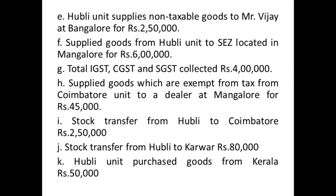Transaction 6: Supplied goods from Hubli unit to SEZ located in Mangalore for Rs. 6,00,000. Both Hubli and Mangalore are in Karnataka, so it is intrastate. We have to take it under aggregate turnover. However, supply to an SEZ is zero rated — exports, SEZ, free trade zones, export oriented units are all zero rated. Therefore, it will not come under taxable turnover.